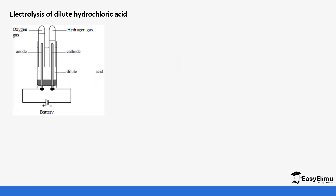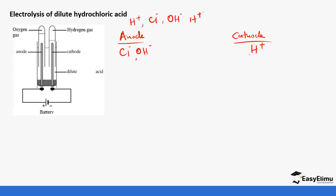Let's look at another example — electrolysis of dilute hydrochloric acid. We identify the ions in solution: hydrogen ions, chloride ions, hydroxide ions. At the anode, the anions are the chloride ions and hydroxide ions. At the cathode, the hydrogen ions are the only cation. At the anode, the hydroxide ions would be preferred because they have a higher tendency to lose electrons — they are more negative or less positive. Chloride ions are positive, but less so compared to hydroxide ions.